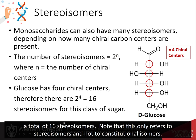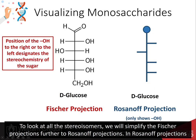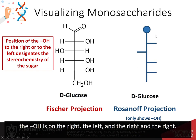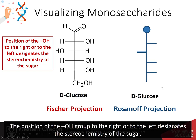To look at all the stereoisomers, we will simplify the Fischer projections further to Rosanoff projections. In Rosanoff projections, only the direction of the hydroxyl group is given by the horizontal bonds; the hydrogens bonded are implied. So for glucose, you can see that the OH is on the right, the left, the right, and the right. The position of the hydroxyl groups to the right or to the left designates the stereochemistry of the sugar.